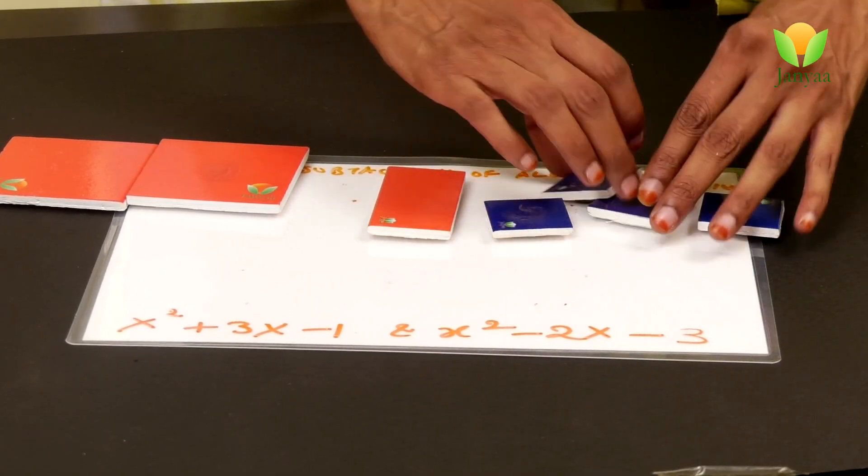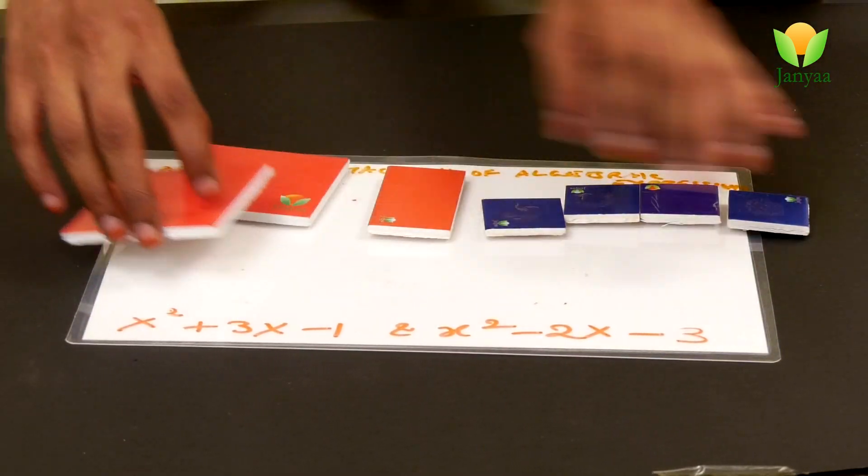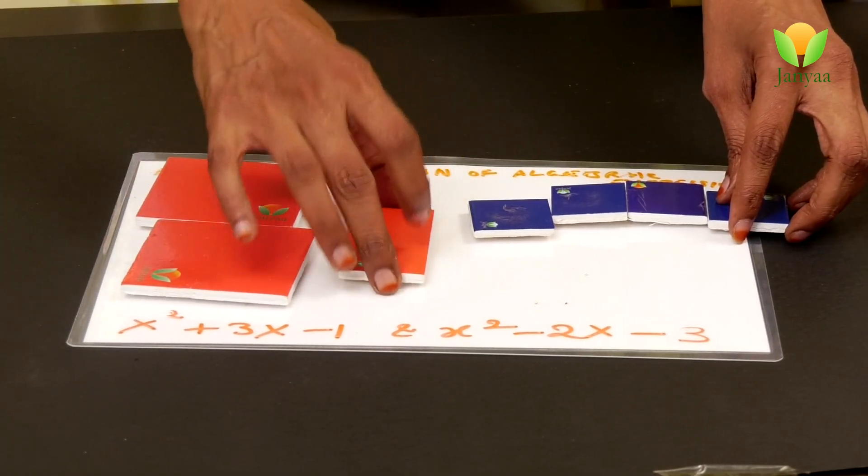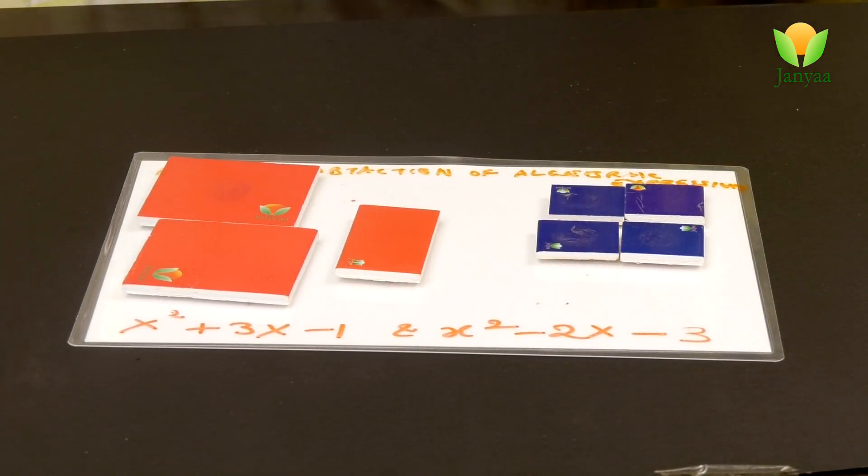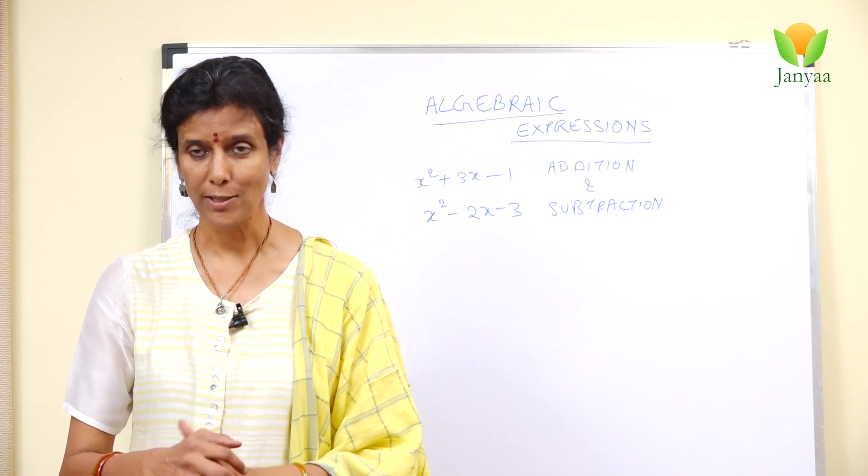So this is the final equation here. So if you see, 2x squared plus x minus 4. That's what you get when you add these two equations.